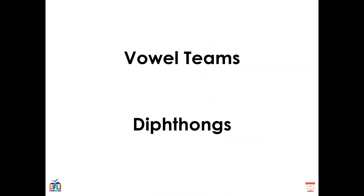There are two types of vowels that we'll be looking at today: vowel teams and diphthongs. But what's the difference? Just to review, a vowel team is two vowels working together to make one sound, like E and A coming together to make the sound E. This is different from a diphthong. A diphthong is two vowels coming together to make a sliding vowel sound, like OW saying OW. We can tell it's a diphthong — a sliding sound — because our mouth changes when we say it.